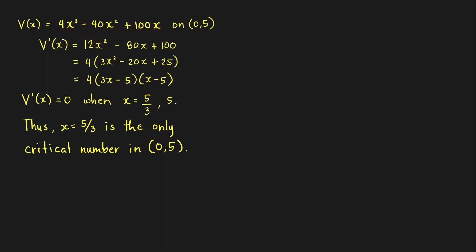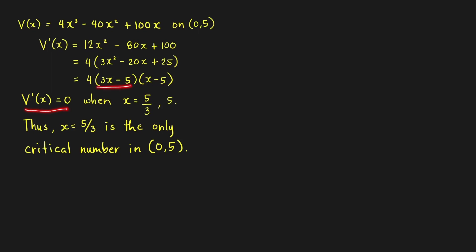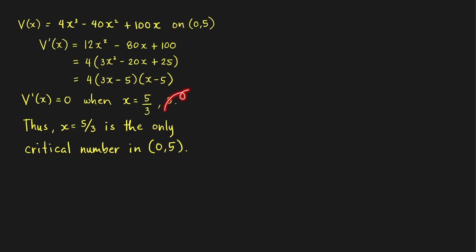We can easily find the critical numbers by factoring. We factor out the GCF of 4, giving 4(3x² minus 20x plus 25), and factoring the trinomial we get 4(3x minus 5)(x minus 5). Since this derivative always exists, we find critical numbers by setting V'(x) = 0. This gives x = 5/3 and x = 5. Since we are considering the function only on the open interval (0, 5), we ignore x = 5. Thus x = 5/3 is the only critical number of V on (0, 5).